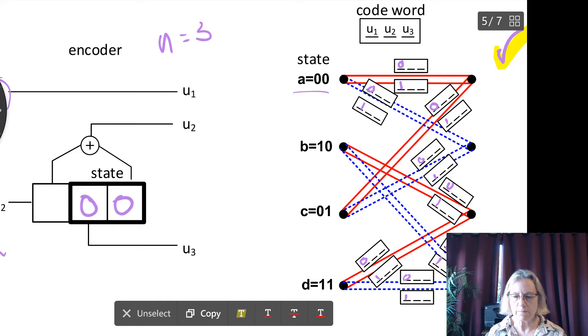And of course the two possibilities are that I could have at the input M2 could be a 0 or could be a 1. And of course if I'm at state 0, 0 and I put in a 0, I'm going to stay at state A.